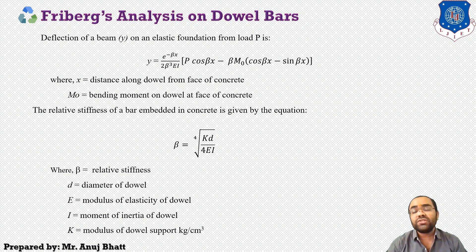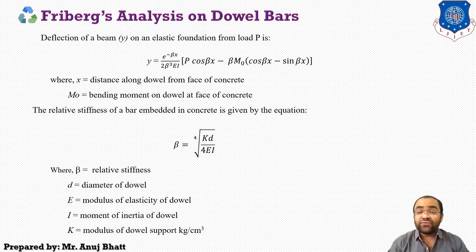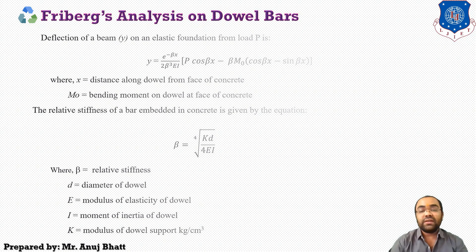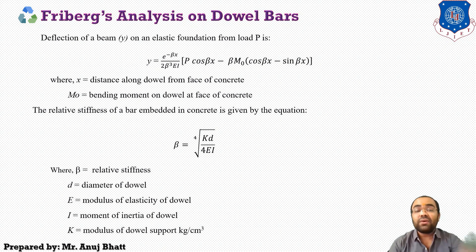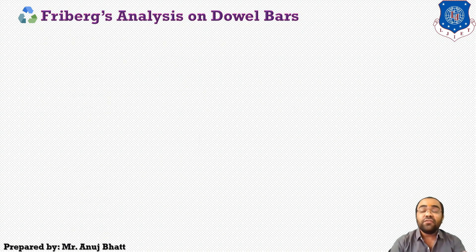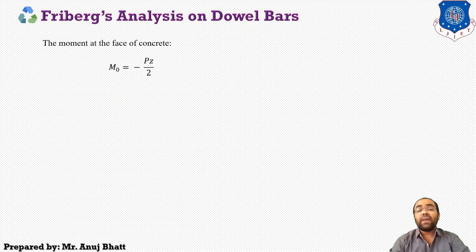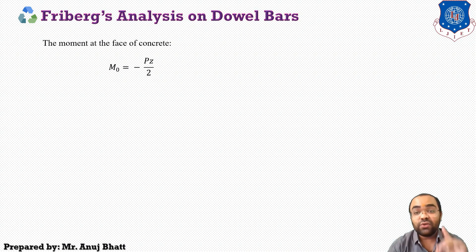Freiburg applied this equation for concrete pavements. Now if the joint width opening is Z and the concrete is very stiff compared to the steel bars, the moment at the face of the concrete is considered as M0 equals minus PZ/2. This M0 is the bending moment at the dowel bar at the face of the concrete.